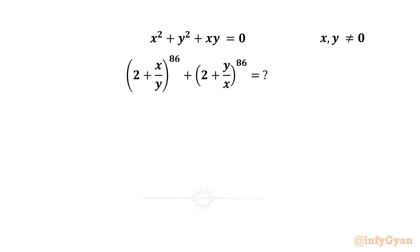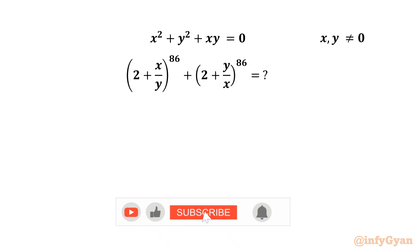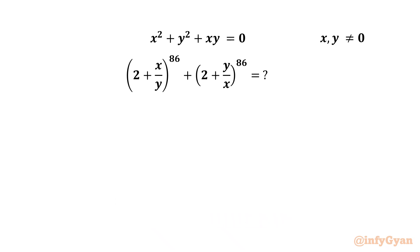Hello friends, welcome back to InfiGyaan. Today in this video we are going to solve one very interesting and challenging question from algebra. We have to evaluate the expression (2 + x/y)^86 + (2 + y/x)^86, given that x² + y² + xy = 0, where x and y cannot be 0.